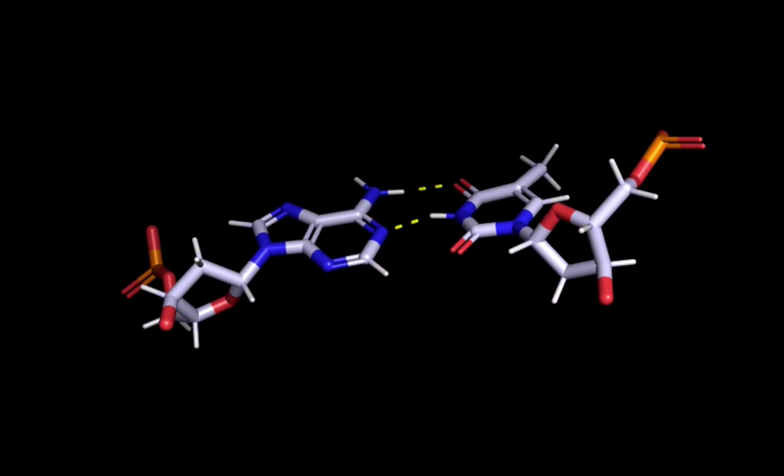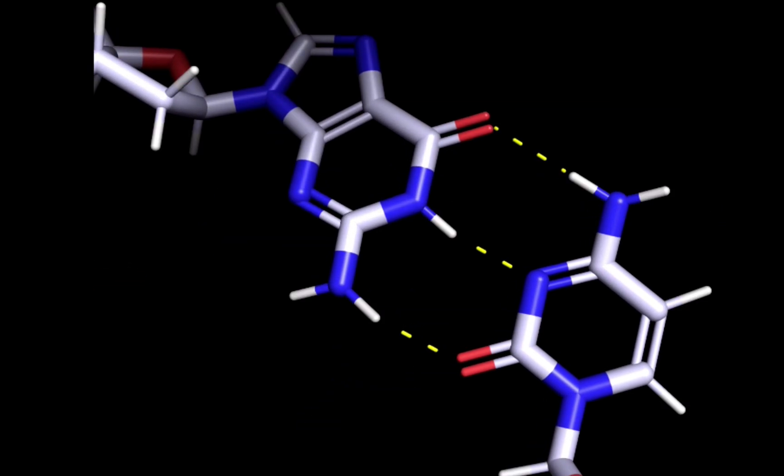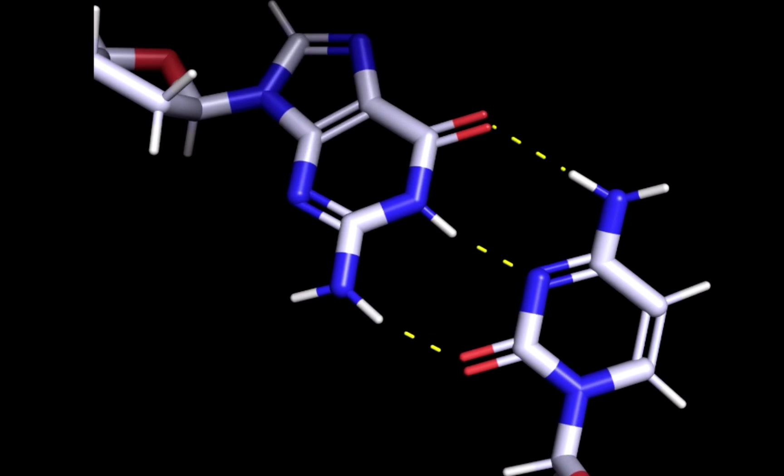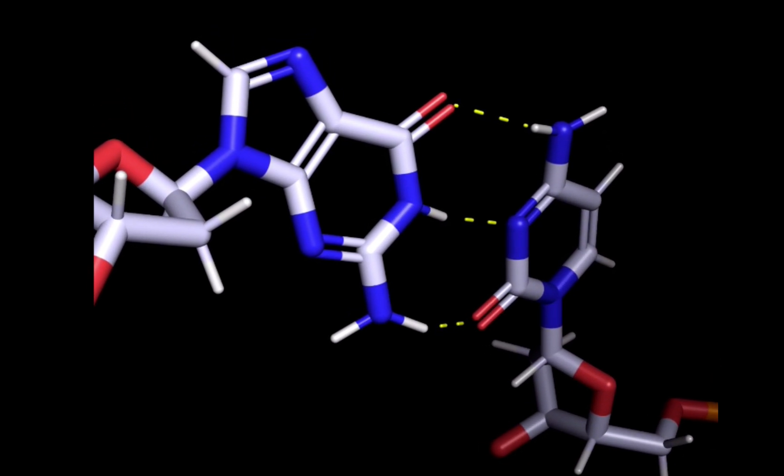The other pairing occurs between the pyrimidine C and the purine G. The hydrogen bonding is similar, however there is an extra amine-carbonyl-hydrogen bond. The three hydrogen bonds that hold G and C together add extra stability to the double helix.